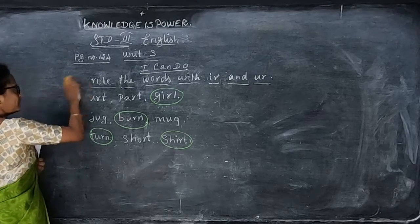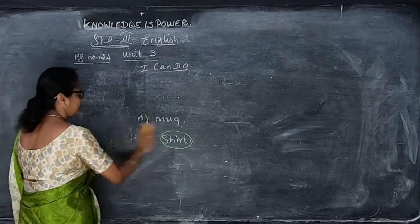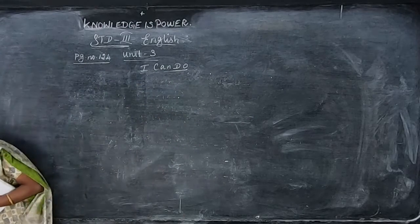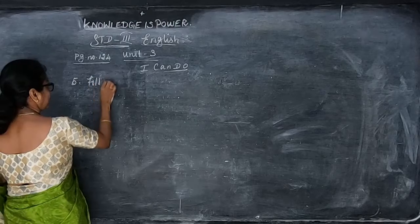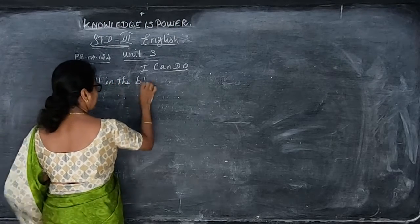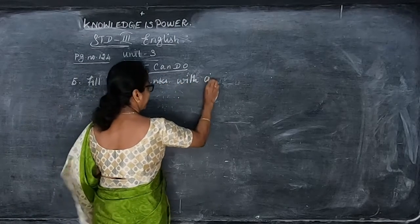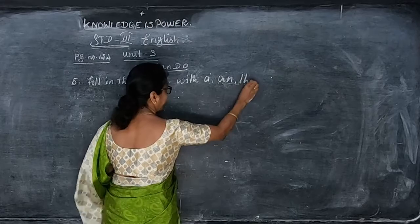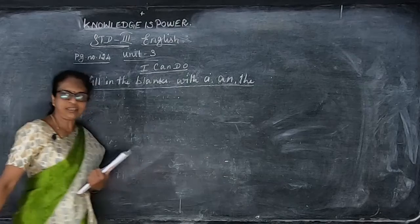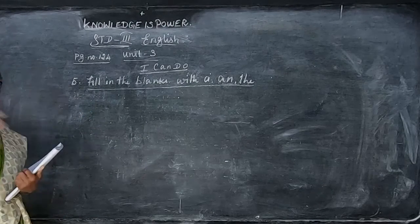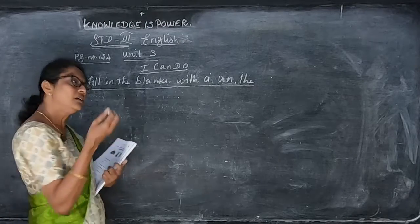Now the next one is the fifth exercise: fill in the blanks with 'a', 'an', and 'the'. If you are starting with vowels A, E, I, O, U — we have to use 'an'. No vowels means use 'a'. For unique things, or when the particular thing is mentioned again, or the same thing is repeated — we have to use 'the'.